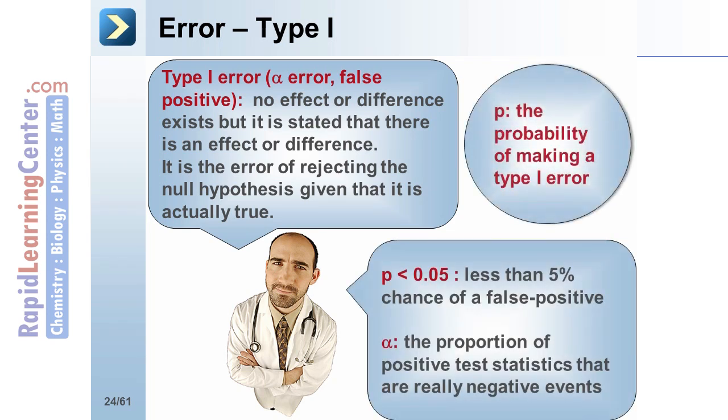Lowercase p is defined as the probability of making a type 1 error. If p is less than 0.05, there is a less than 5% chance of a false positive. Alpha is defined as the proportion of positive test statistics that are really negative events.